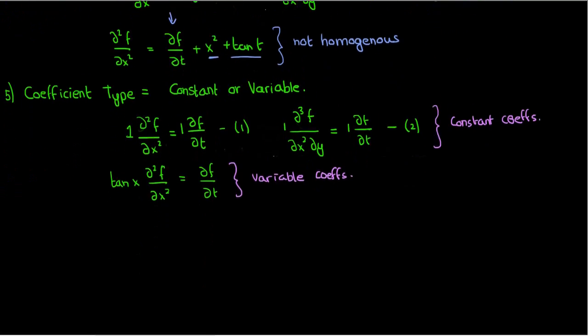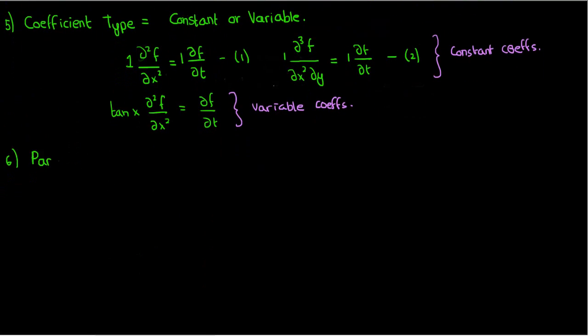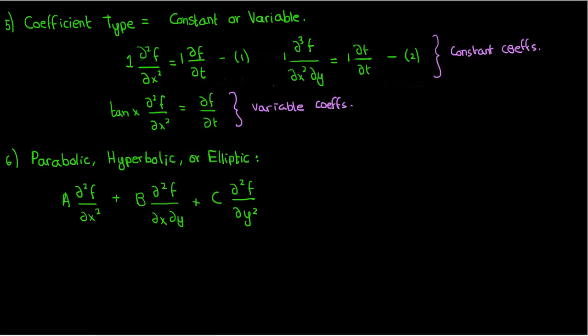The last way to classify PDEs that I'll cover here is based on whether the PDE is hyperbolic, parabolic, or elliptic. We can do this classification for linear second-order PDEs, which look something like A times d²f/dx² plus B times d²f/dxdy plus C times d²f/dy² plus D times df/dx plus E times df/dy plus F times f equals G.